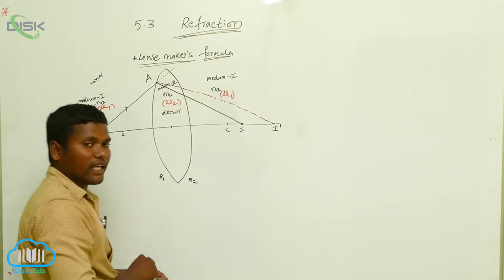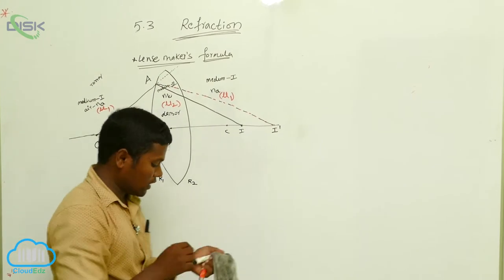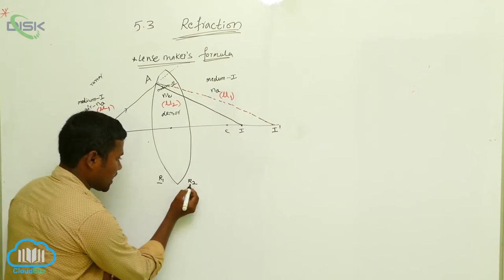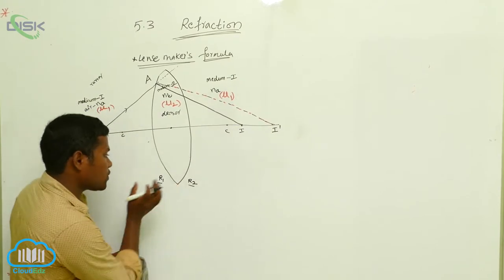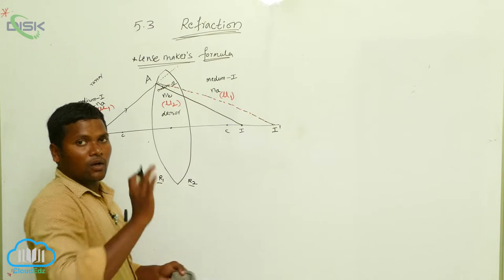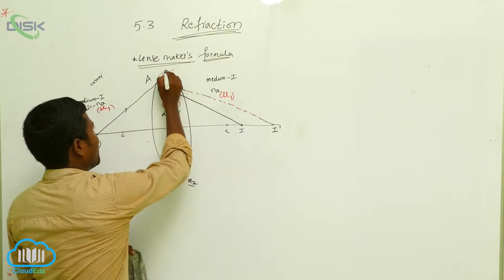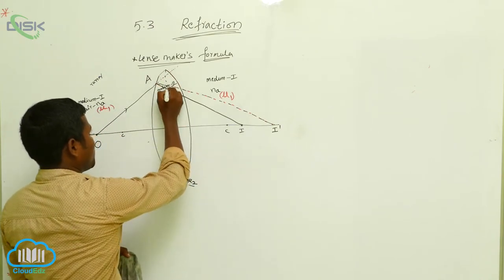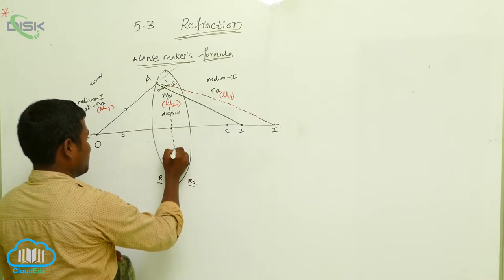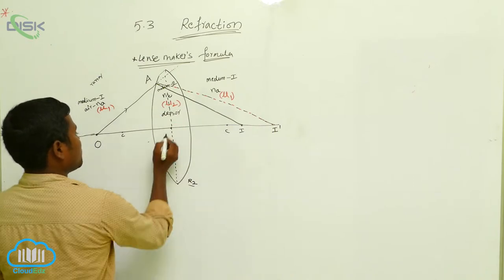This lens — how many curves do we have here? Two curves. What is the first one? R1. The second one? R2. When you fix them together, we call it the lens. This lens has a center point at this point.